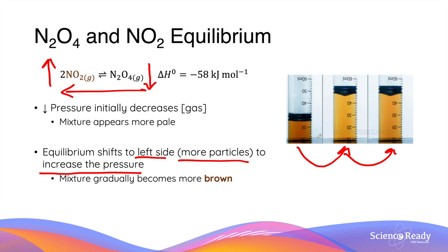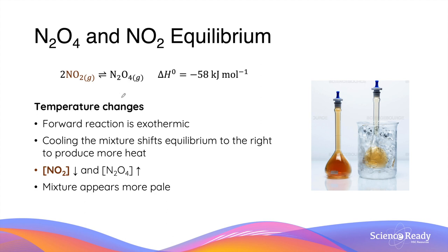Like all reactions, temperature always influences the position of the equilibrium. The forward reaction is exothermic, as indicated by a negative change in enthalpy. Cooling the mixture will shift the equilibrium to the right side in order to produce more heat. Again, this is applying Le Chatelier's principle. The movement of equilibrium to the right-hand side will decrease the concentration of NO2 while increasing the concentration of N2O4. As a result, the mixture becomes more pale when the flask containing the mixture is submerged in a beaker full of ice.